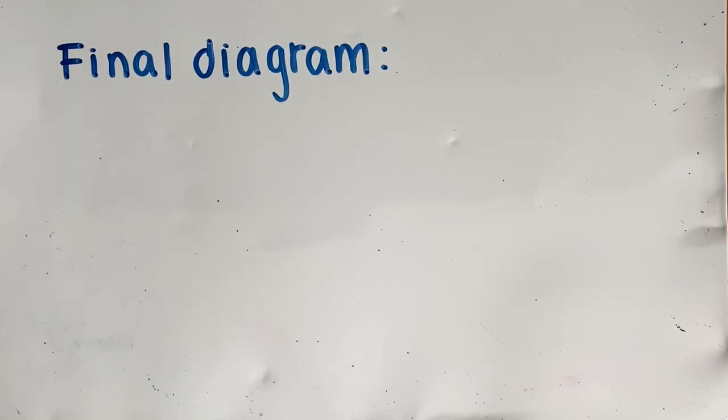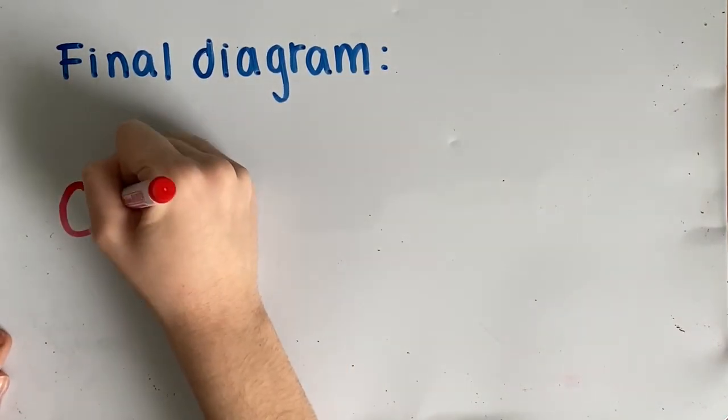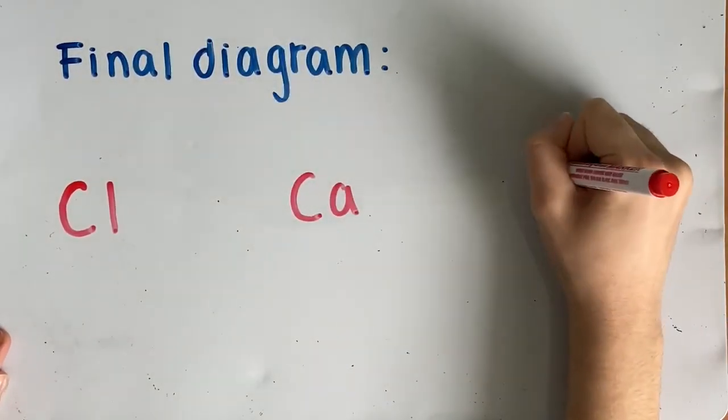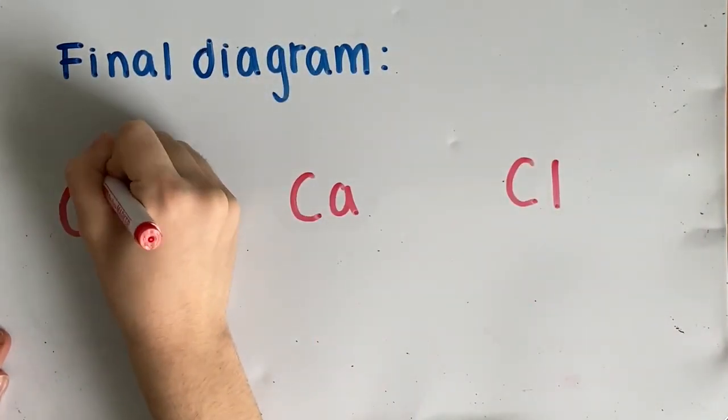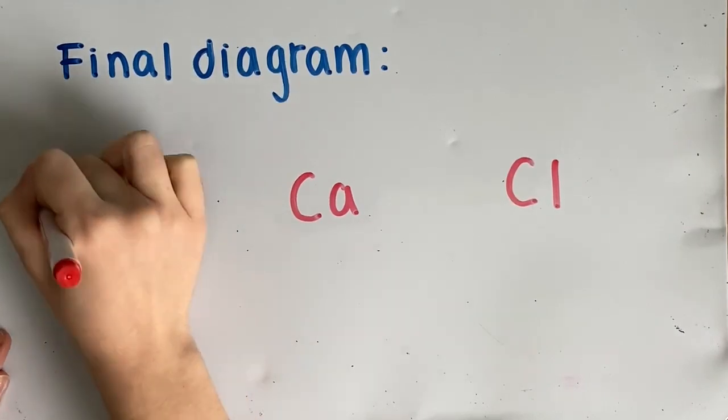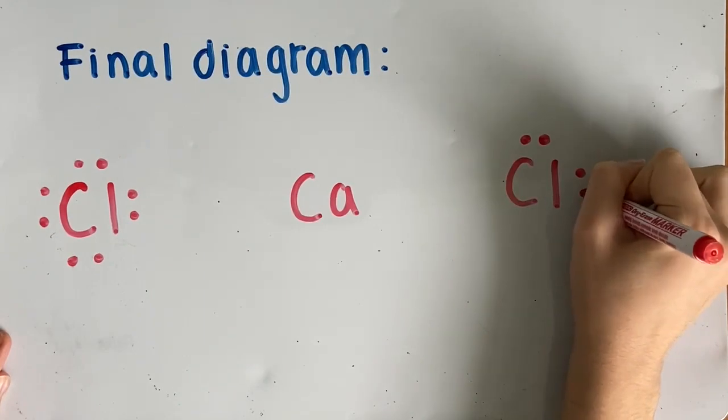Finally, we have the final diagram. Once the transfer is complete, we need to show the resulting amount of electrons in each atom, as well as their charges. Knowing that, we would write our final diagram as follows. Chlorine, after gaining one electron, has a complete valence shell. We would represent this by showing chlorine surrounded by eight dots. Calcium, after losing two electrons, is represented by no dots surrounding it. The second chlorine atom, after gaining one electron, has a complete valence shell.